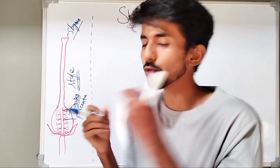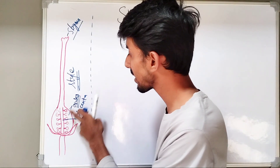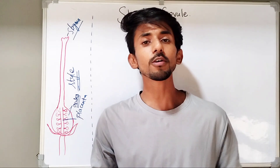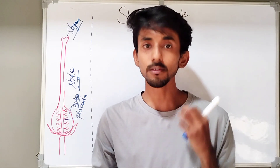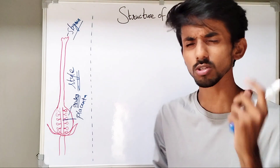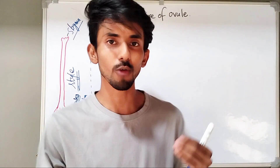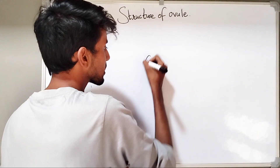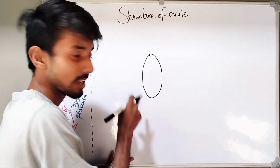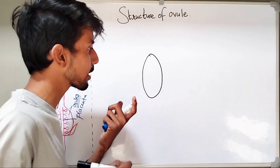Ovules will not be dispersed or scattered anywhere in the ovary — ovules will be connected to the placenta. So, ovules are the main reproductive structures in which the gametes are produced. The female gametes or the egg is produced. Let us study the structure of an ovule now. Firstly, we will have the embryo sac. Inside the embryo sac, the egg cell or the ovum will be produced.